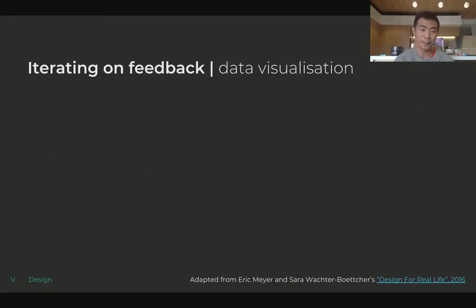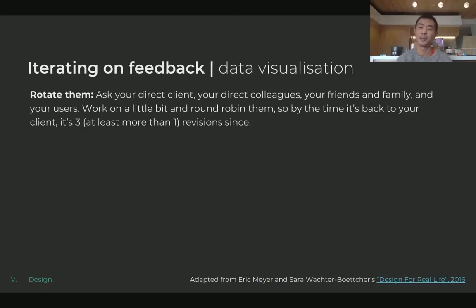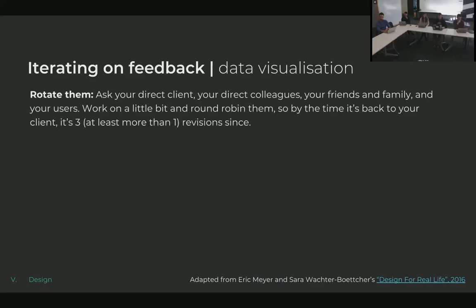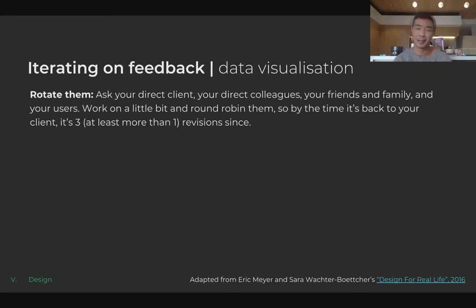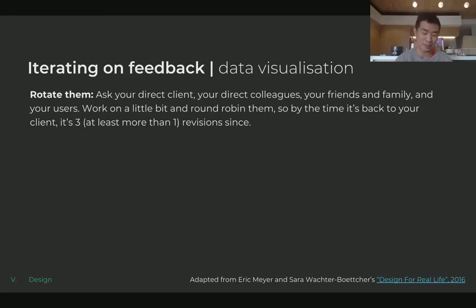On iterating on feedback: I bring my work to different people each time I make progress. When clients see it too often, they get numb and can only give nitpicking feedback. Nitpicking is only useful when finalizing at the end — throughout the process, you want high-level directional feedback. To solve this, I go to different colleagues, friends, people who know the datasets or have never seen them, and ask what they think — getting honest, sometimes brutal, but perspective-rich feedback.